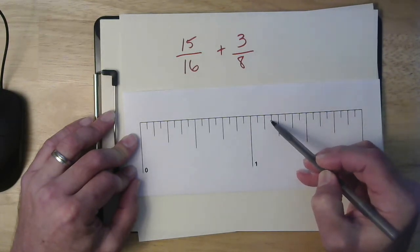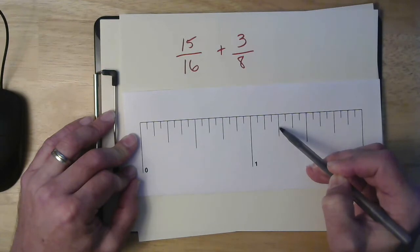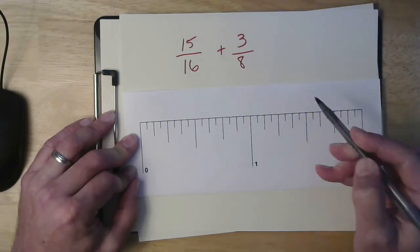twice, three times. So now fifteen-sixteenths plus three-eighths. This is one and a quarter, which would be one and four-sixteenths. So that's one and five-sixteenths.